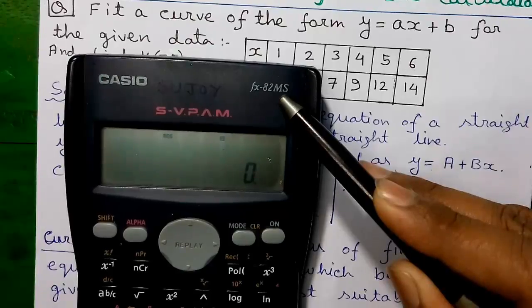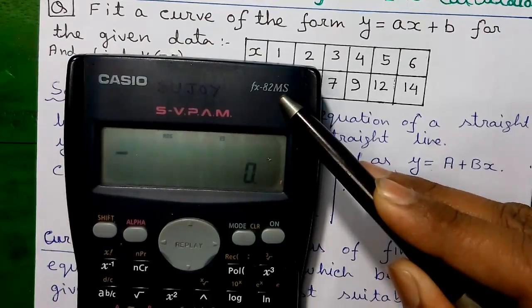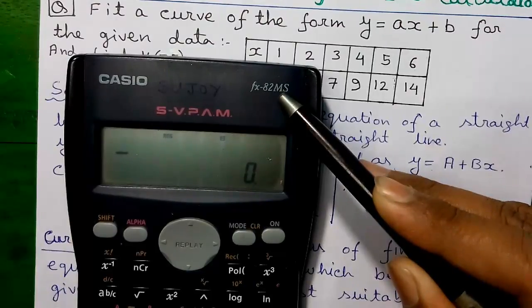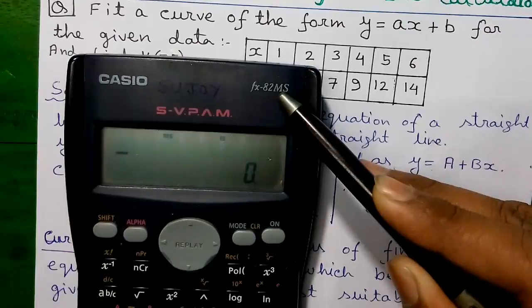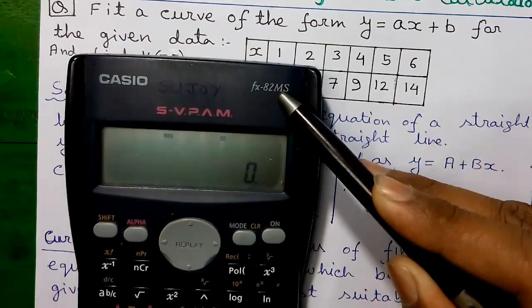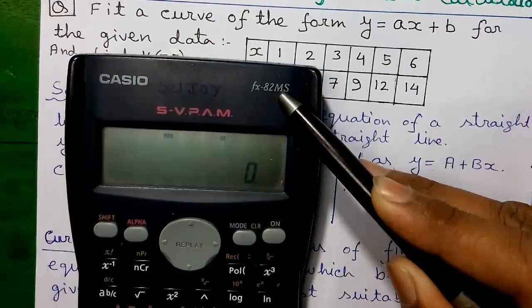Do you know? You can find out the equation of the line. You can find out values of X and Y, A and B. You can find the correlation coefficient R, or you can find the estimated values of X and estimated values of Y for any given value. Isn't it cool? So let's start the video.